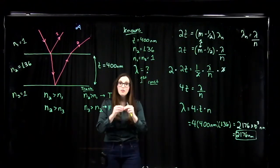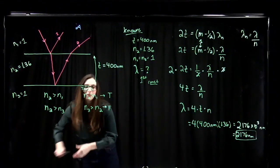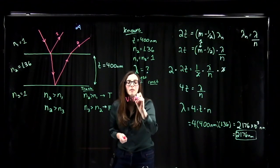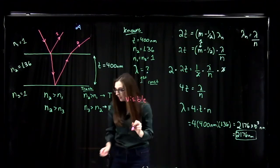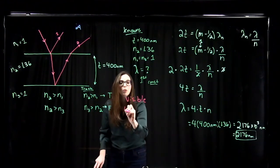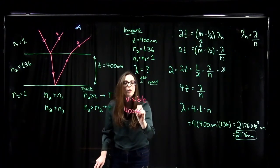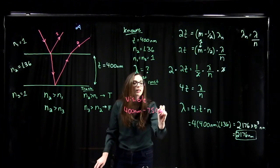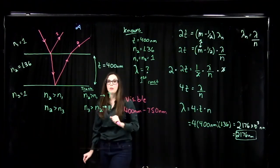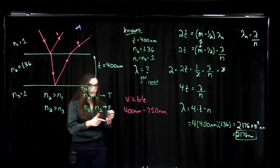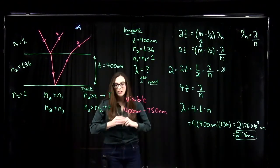For visible light, the wavelength is between 400 nanometers and 750 nanometers. So 2,176 nanometers is well outside the visible range — we wouldn't be able to see that wavelength with our human eyes, but other detectors might be able to detect it.